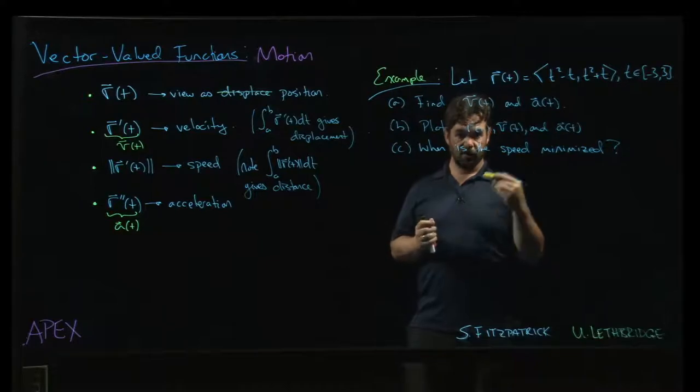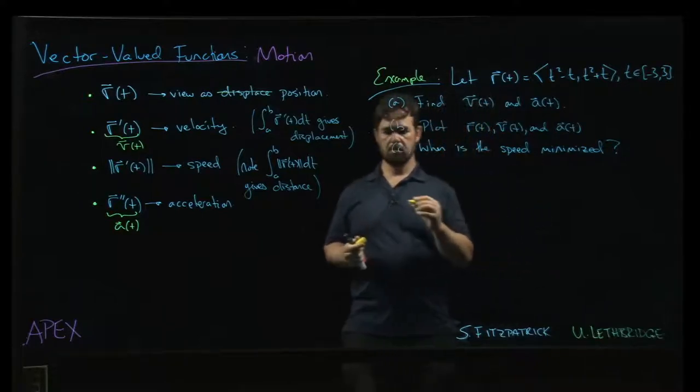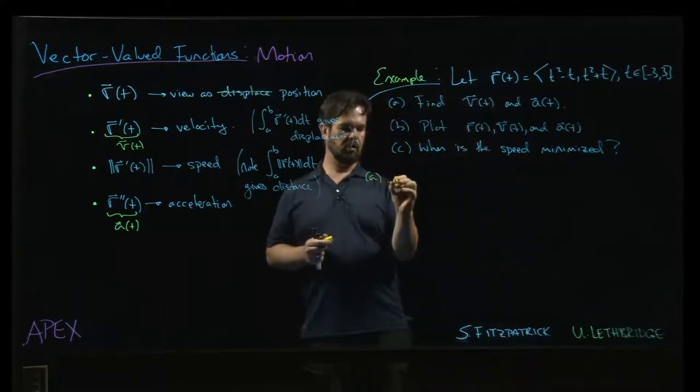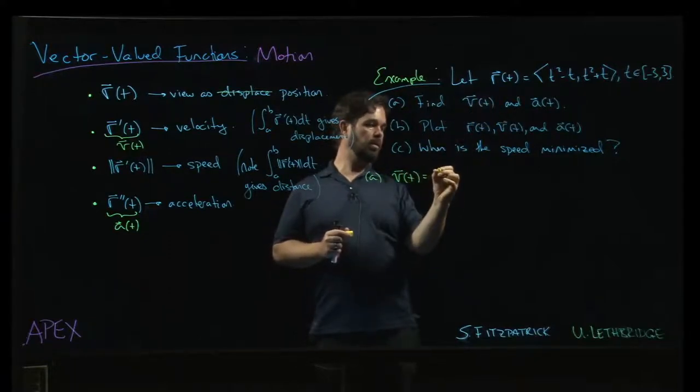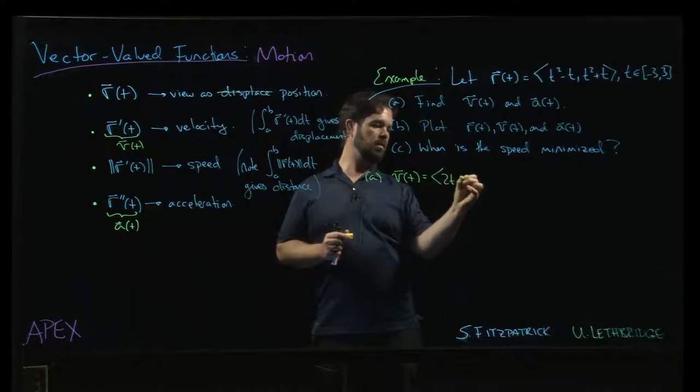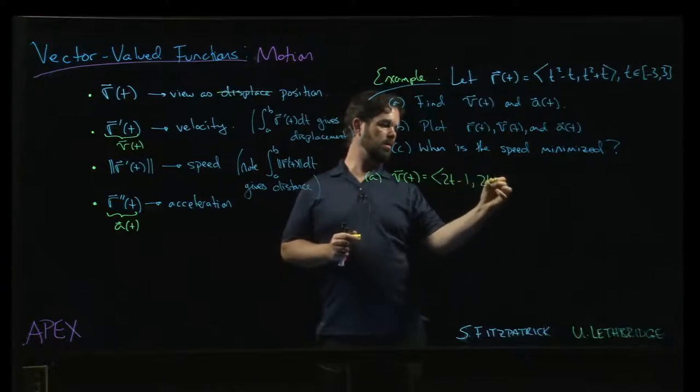Okay, so the first part asks us to find the velocity and the acceleration. That's not so bad. For the velocity, we take the derivative term by term. 2t minus 1, 2t plus 1.